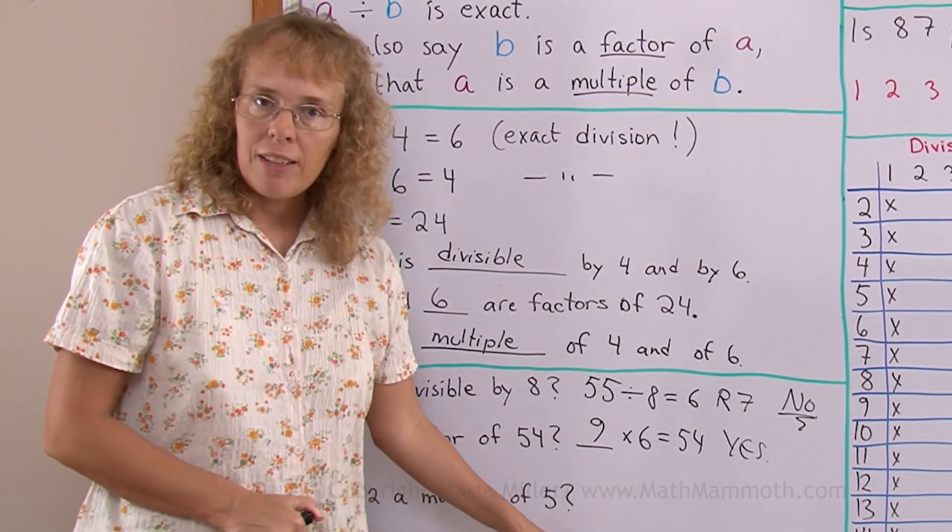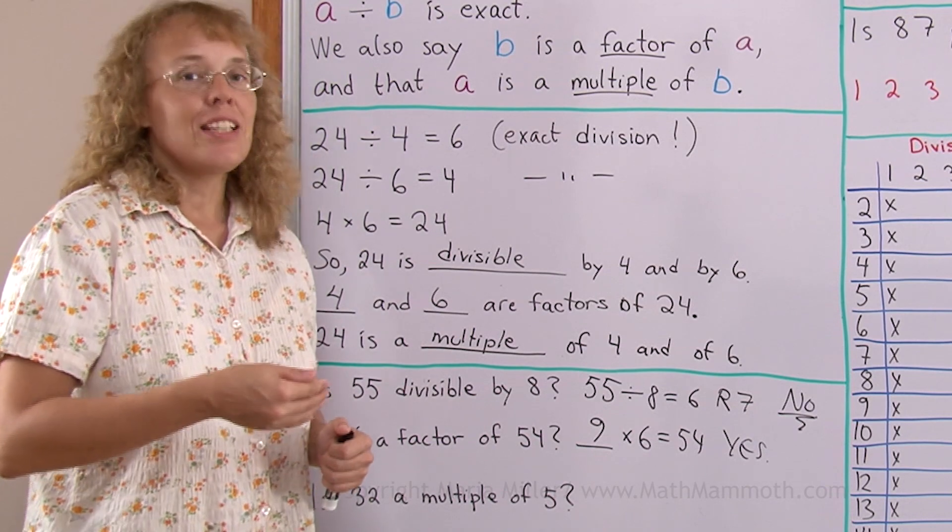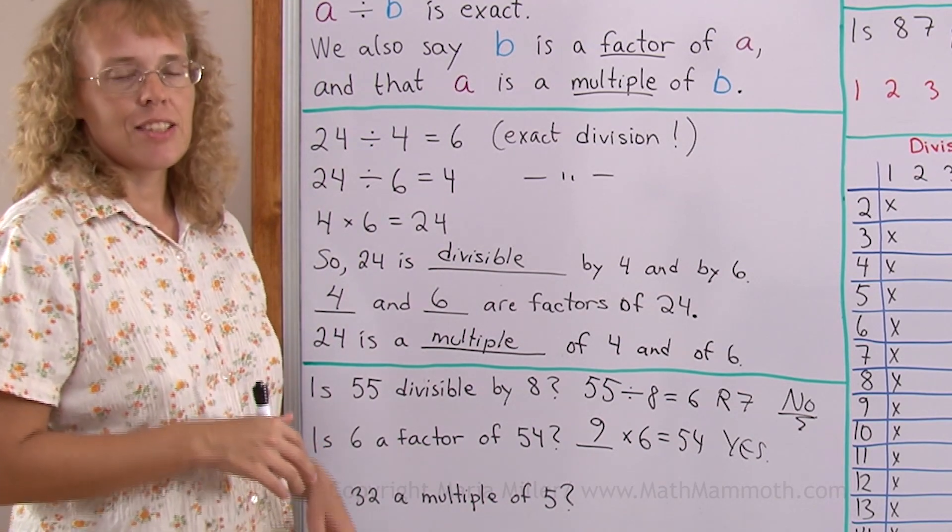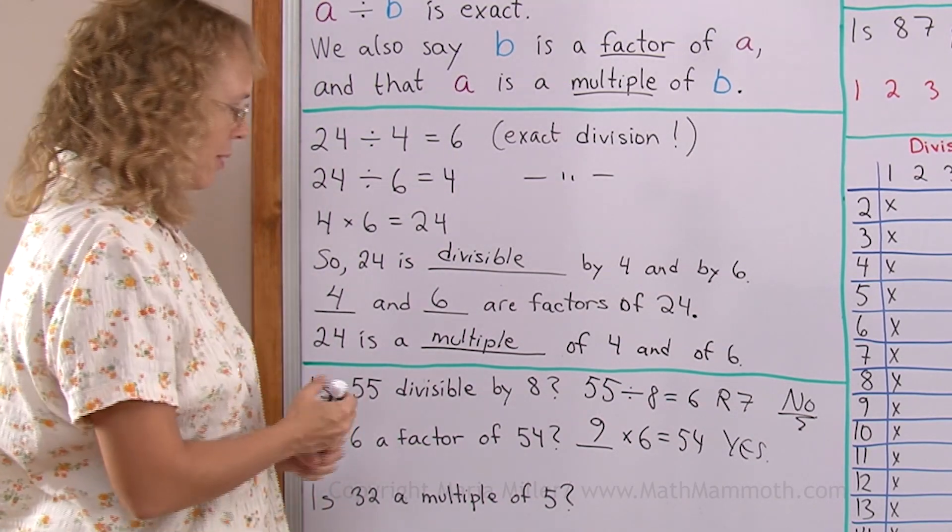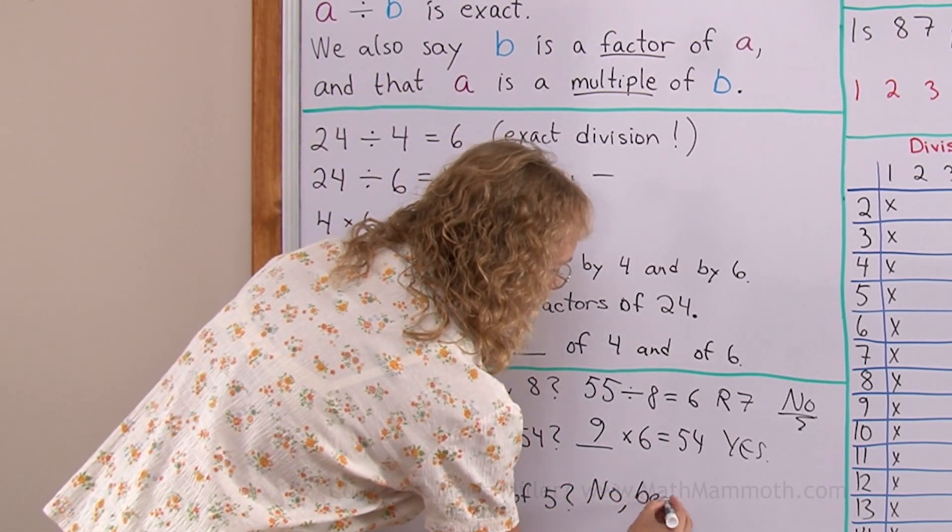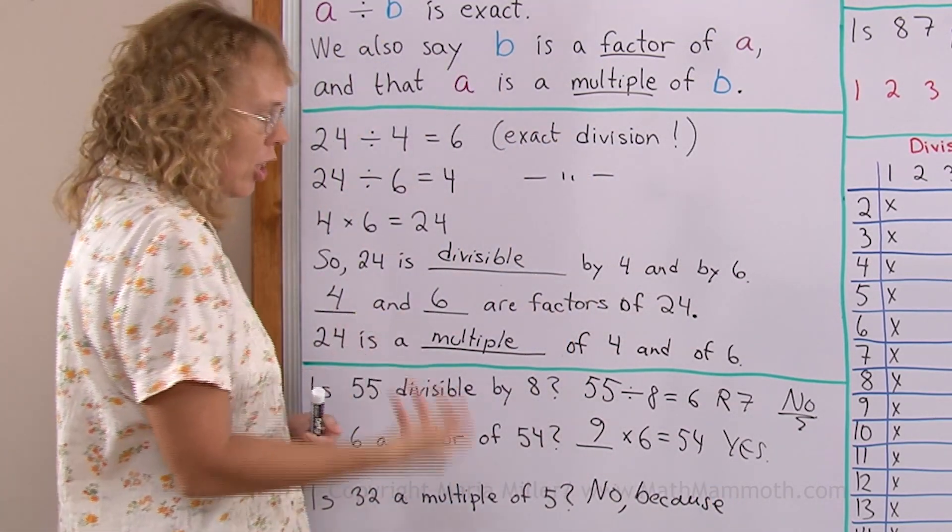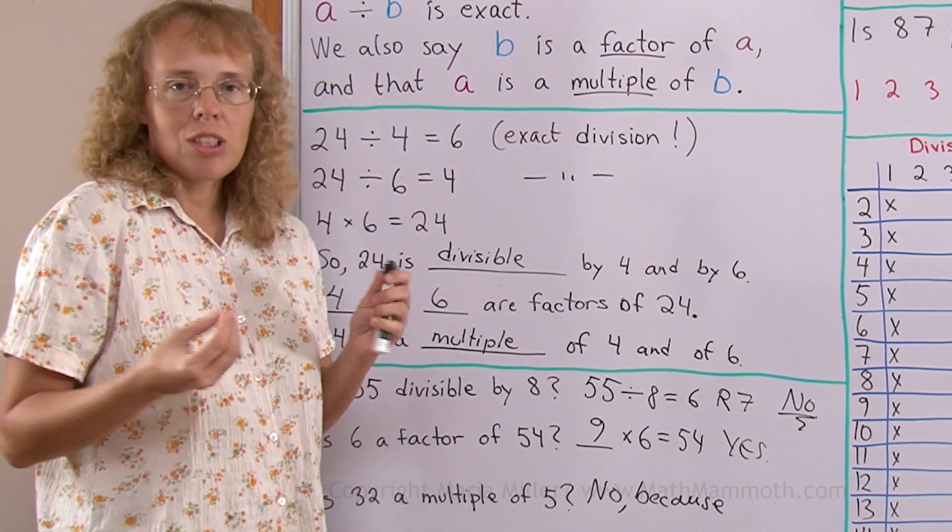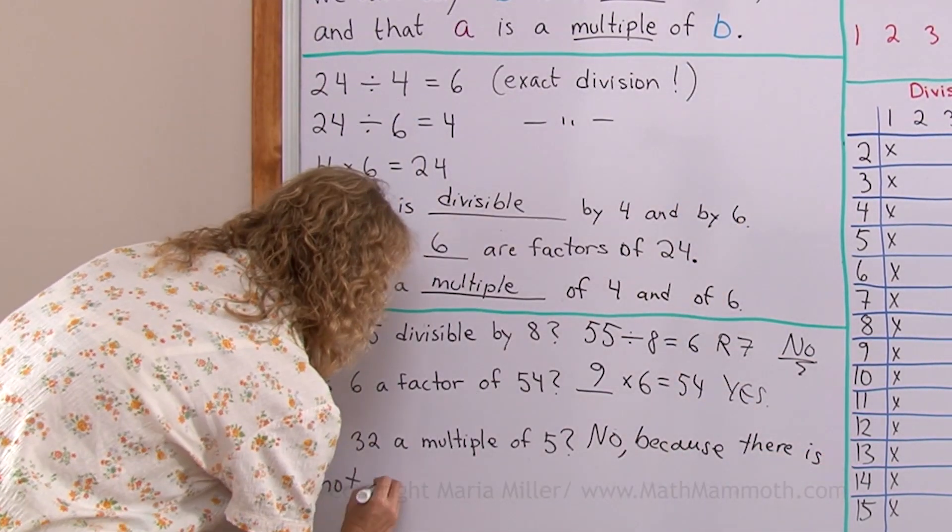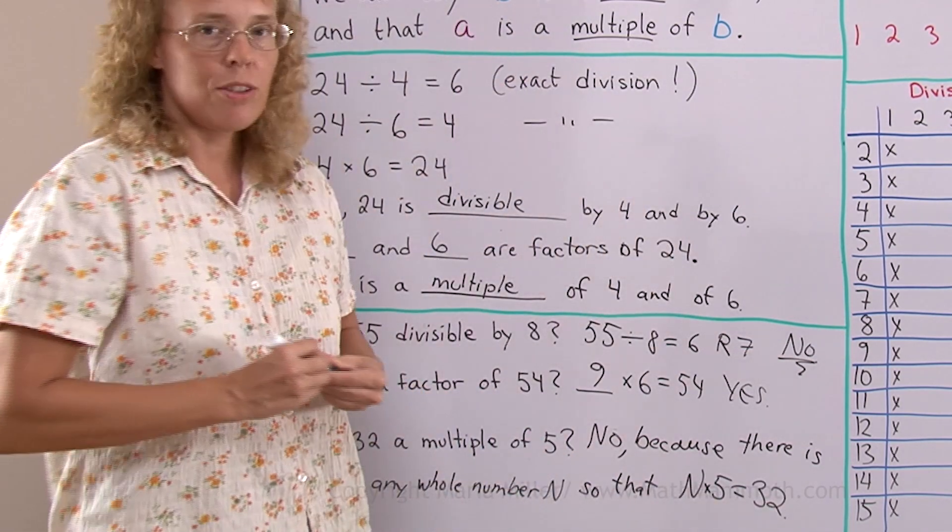Is 32 a multiple of 5? Now multiples of 5 are those numbers that you get in the multiplication table of 5, right? 5, 10, 15, 20 and so on. And so 32 is not in that list. 32 is not a multiple of 5. And you can explain it, give your reason in many different ways. No, because 32 is not in the skip counting pattern by 5s. Or you could say, no, because there is no such number that something times 5 would be 32. No, because there is not any whole number n so that n times 5 would be 32. We cannot find any such n.